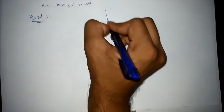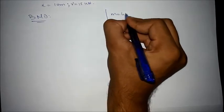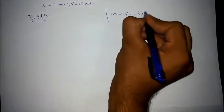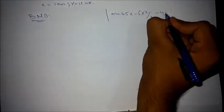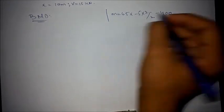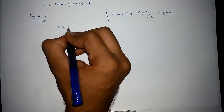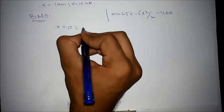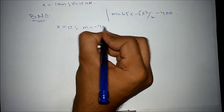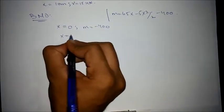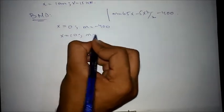For bending moment, we use the equation M equals 65x minus 5x squared over 2 minus 400. At x equals 0, we get a moment value of minus 400. At x equals 10, we get a moment value of 0.